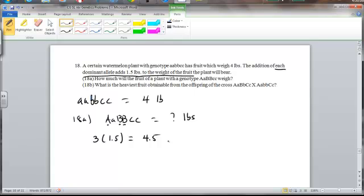Now, so if this totally homozygous recessive plant fruit weighs 4 pounds, I need to add 4.5 pounds to that 4. So take that 4 pounds and then add my 4.5 pounds, so that should be 8.5 pounds. Okay, that's 18a.